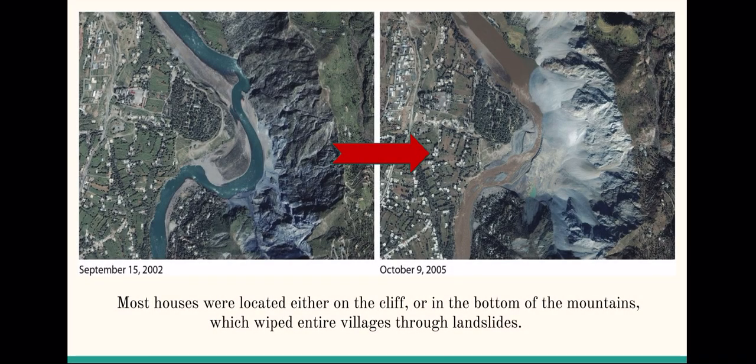This was a big concern because most housing and urban areas within the Kashmir region were located on cliffs and at the bottom of where mountains and cliffs are located, which wiped entire cities and villages through landslides while the earthquake was occurring. The Kashmir earthquake triggered mass movements, and these directly or indirectly caused approximately 26,000 fatalities. The landslides triggered by the earthquake covered an area of approximately 4,660 square miles or 7,500 kilometers.